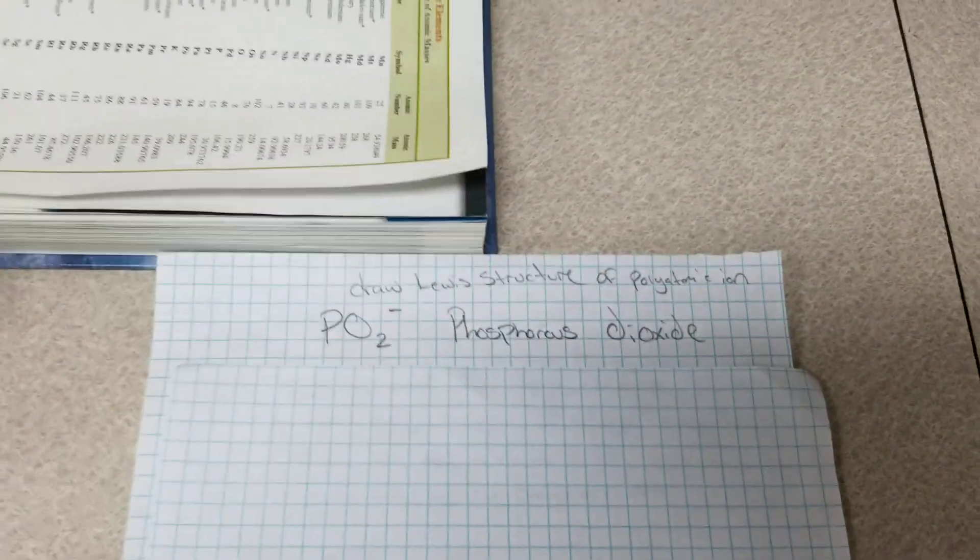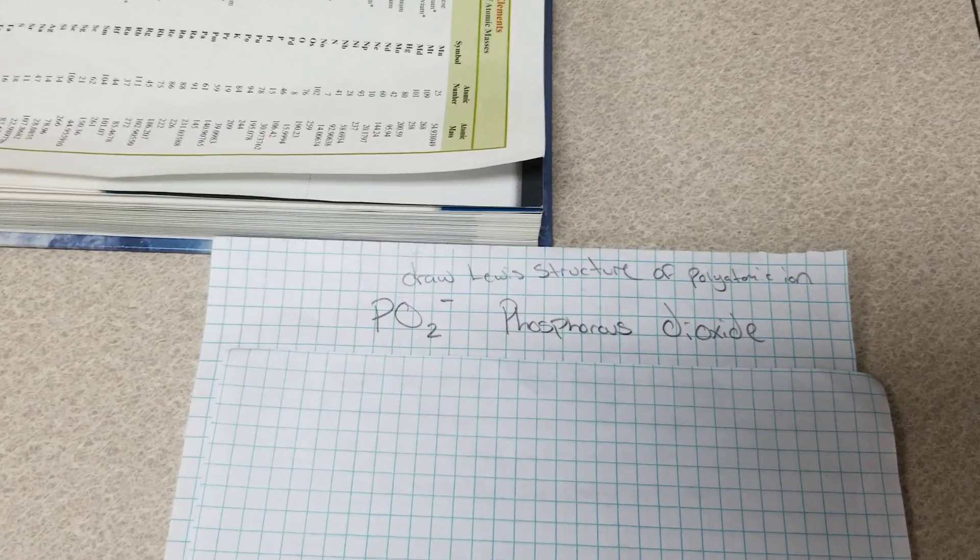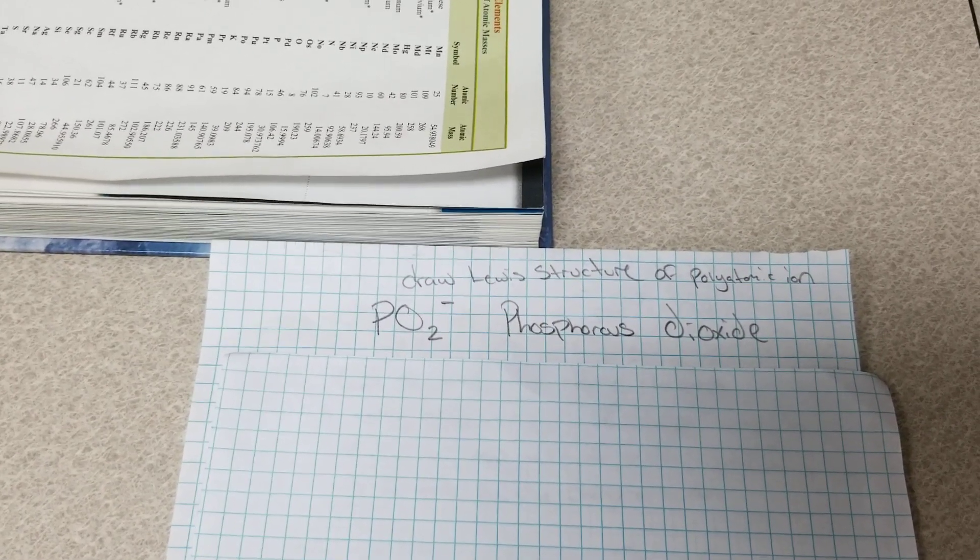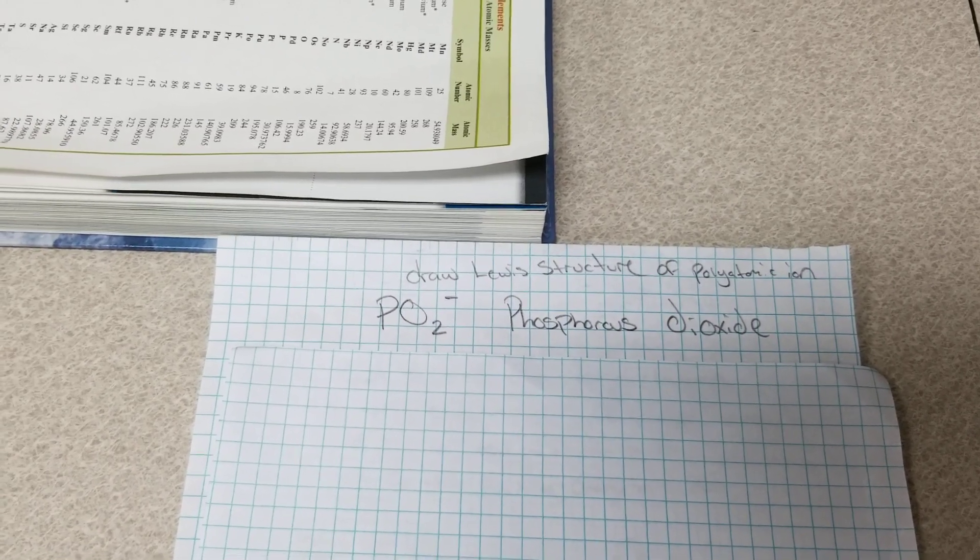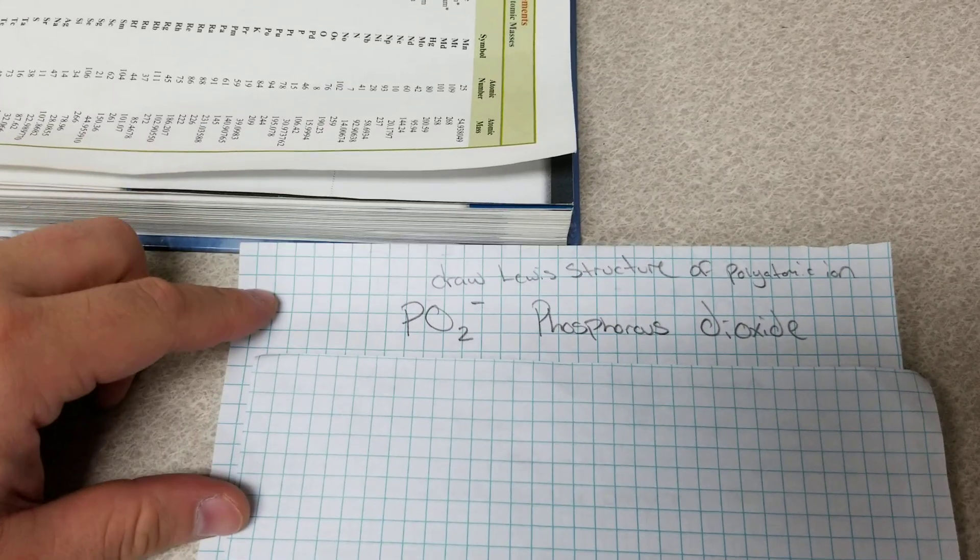Hi my name is Christopher Guerrieri and I will be demonstrating how to draw a Lewis structure of a polyatomic ion. The polyatomic ion is phosphorous dioxide with the chemical formula PO2 with a negative electrical charge.